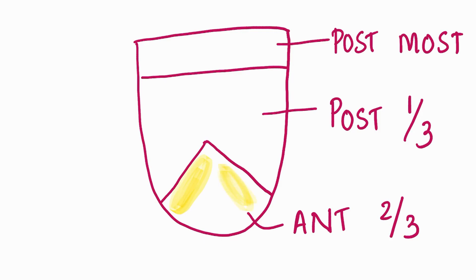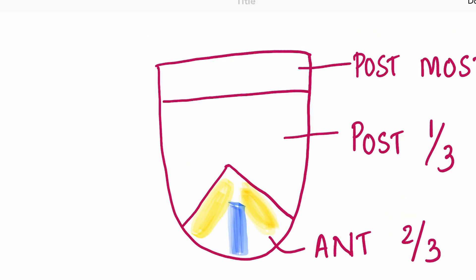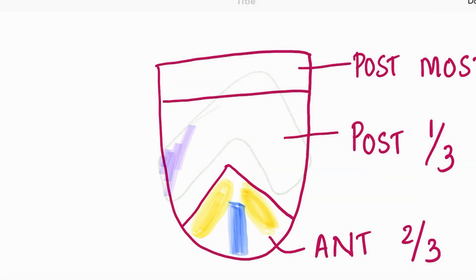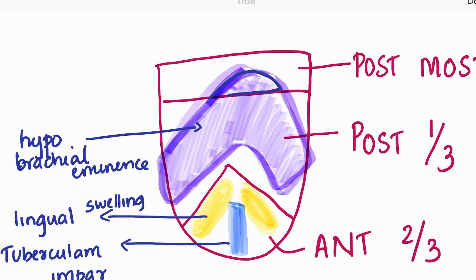The anterior two-third is derived from two lingual swellings and one tuberculum impar. Tuberculum looks like a tube and the lingual swellings are round. Posterior one-third is derived from hypobrachial eminence, which sounds like a mountain. Posterior most part is derived from a small area of the dorsal part of the hypobrachial eminence.